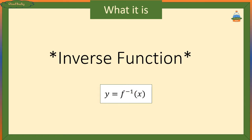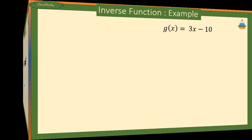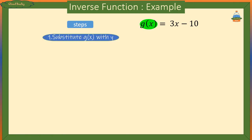Let's look at an example of how to find the inverse of a function. To find the inverse for g of x equals 3x minus 10, we first replace g of x with y, so we have y equals 3x minus 10.